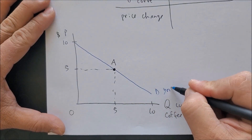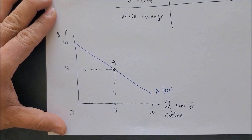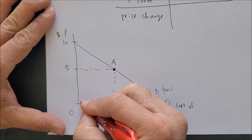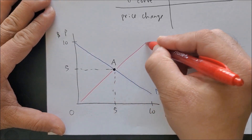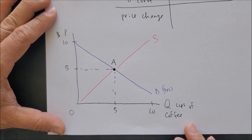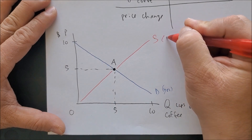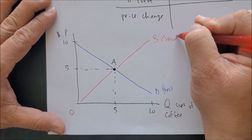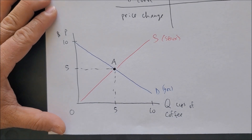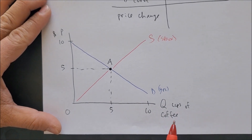This is where you, the consumer, are located. Producers are also present in this graph — the red upward-sloping curve is the supply curve, and we can label this with Starbucks' ticker symbol. Now we have our market for coffee.